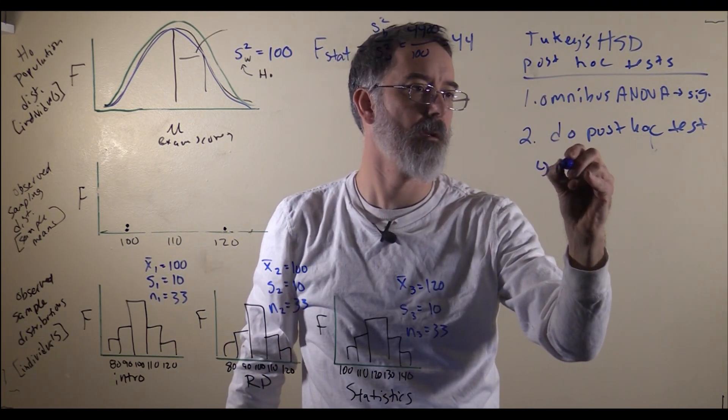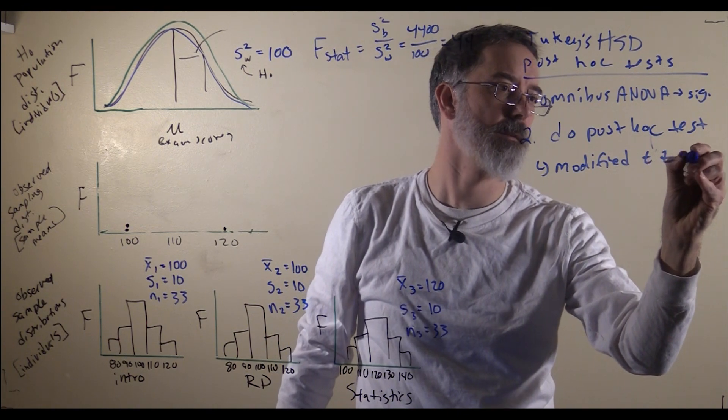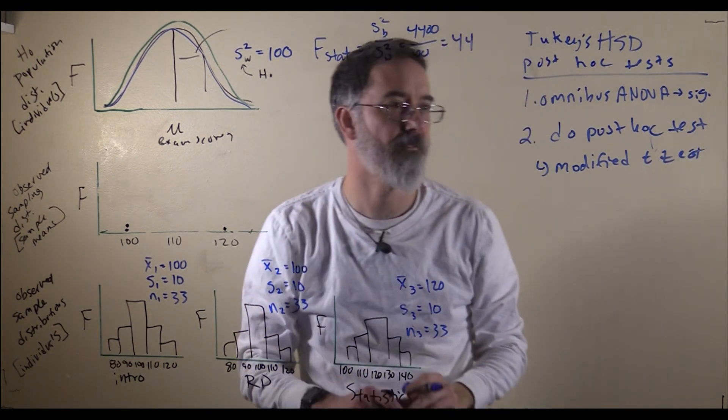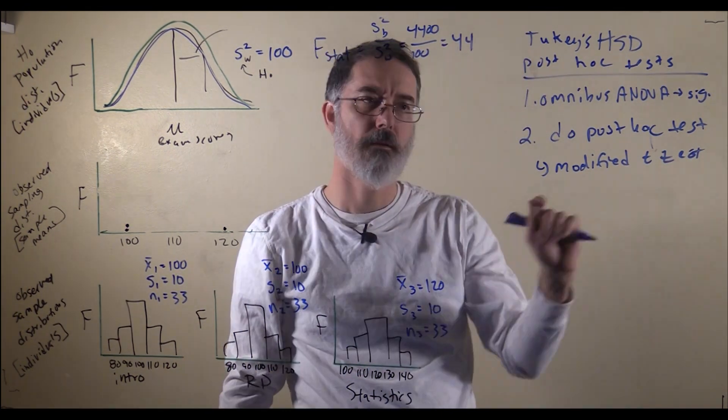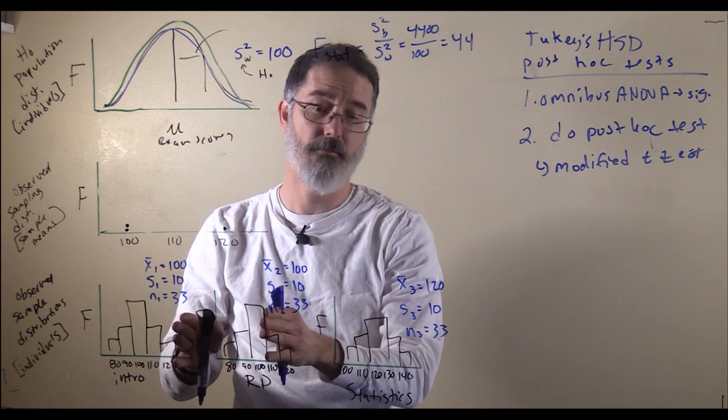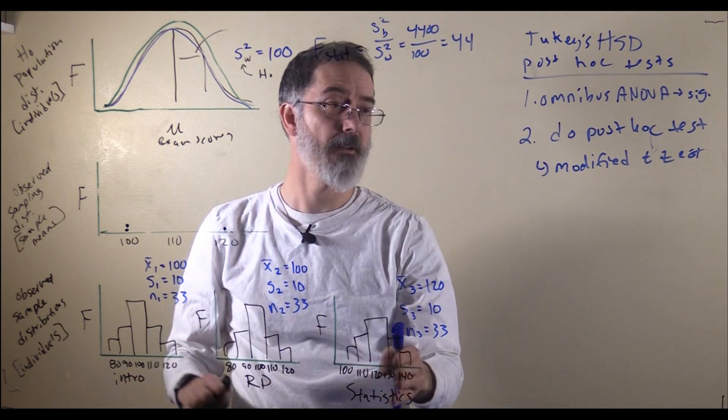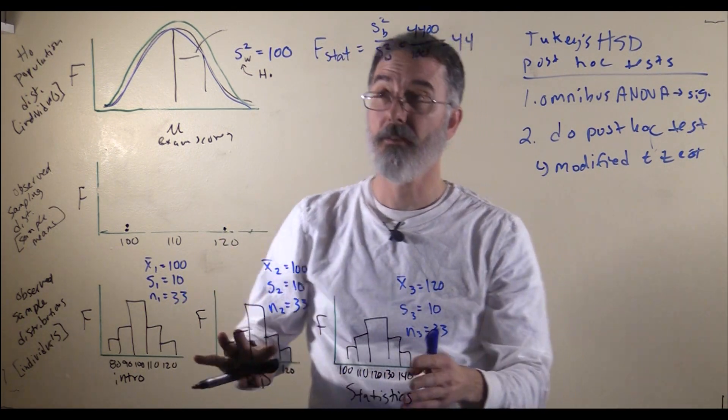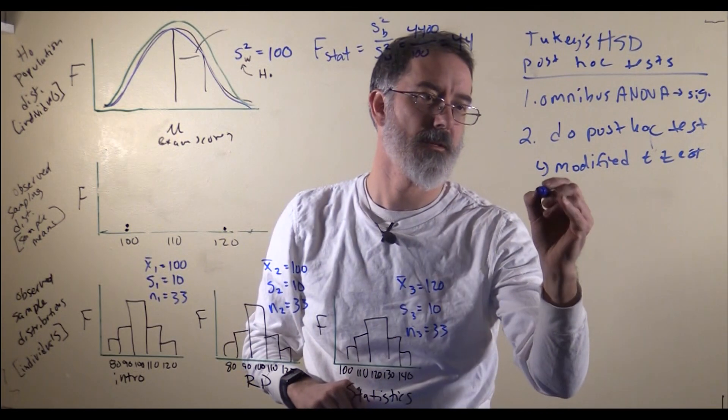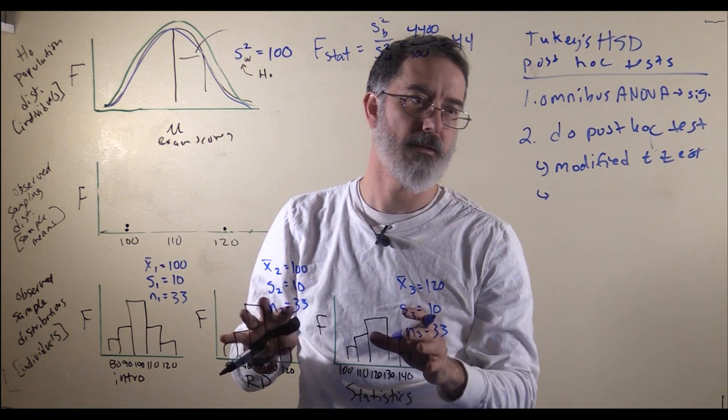Tukey's is a modified t-test. That is the easiest way to think about it, a modified independent groups t-test. One reason it is different from the t-test is, with a t-test you only had two different groups. But with having done ANOVA, we have three different groups, so we have three different estimates of the population's variance, and we are going to use all of those for our t-test.